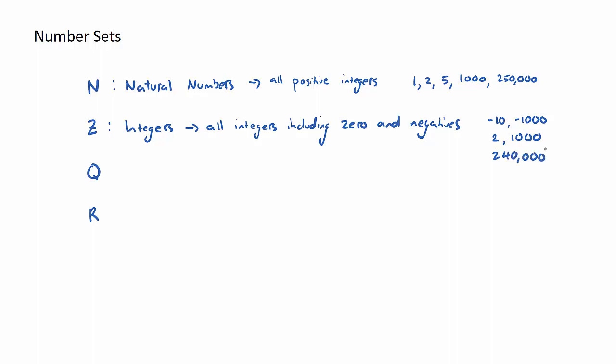And you could see here, and this is a mathematical term, N is actually a subset of Z. So if we do have natural numbers, they are actually also integers.